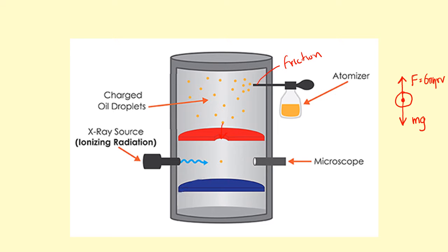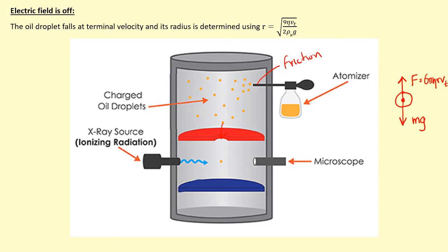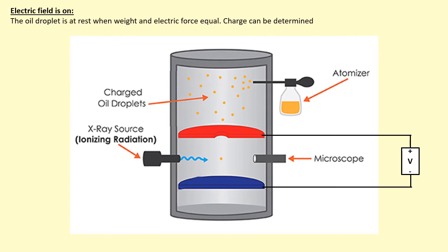We can figure out the terminal velocity by setting these two forces together. This is what we did in the last topic — we showed that the radius can be determined using the terminal velocity of the oil droplet. The second stage is that, now we've worked out the radius using the terminal velocity, we apply a potential difference between the two plates.